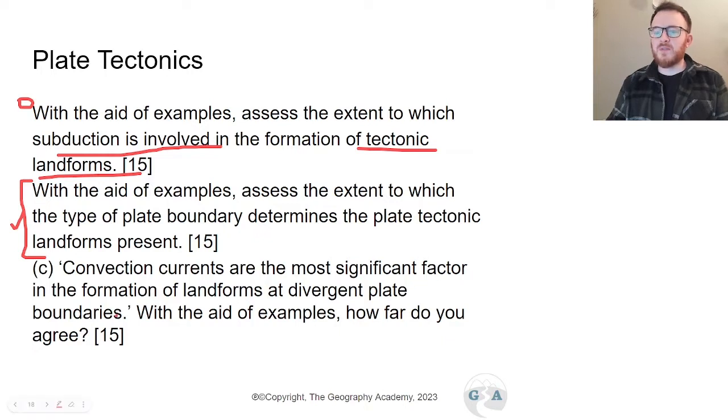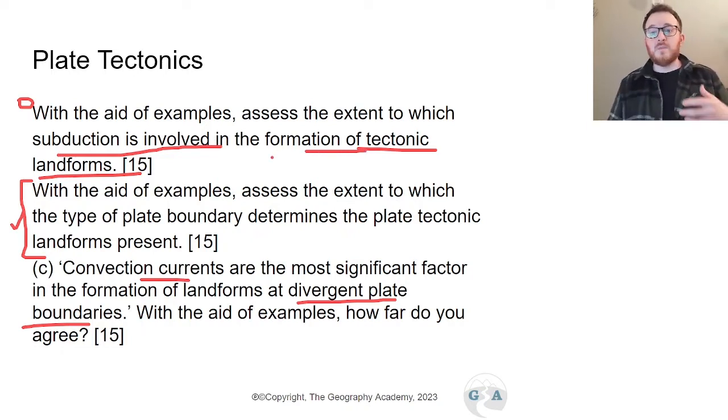Convection currents are the most significant factor in the formation of landforms at a divergent plate boundary. So divergent plate boundary or constructive plate boundary there and it's going in with convection currents this time and not subduction. So you see if you talked about tectonic plate and formation of landforms here, convection currents would have already come up as a very specific point you would have mentioned in each one. So if you guys wanted to help with this remember we've got a course down below that offers loads of sample answers and actually teaches you how it's marked and how to get very high marks in all of these.